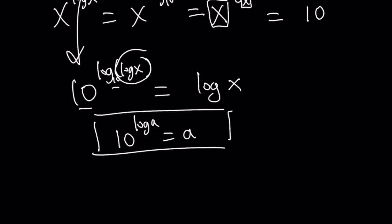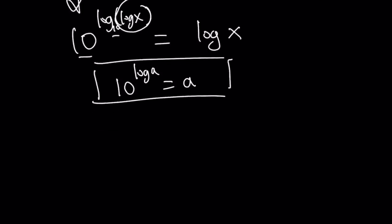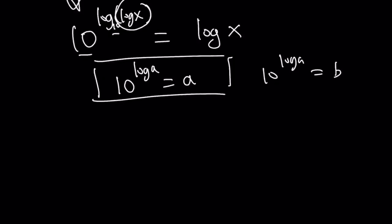Now, if you want to find out why this is true, you can call 10 to the power log a b. And then log both sides, you're going to get log a equals log b, which means b equals a. Make sense? Easy.